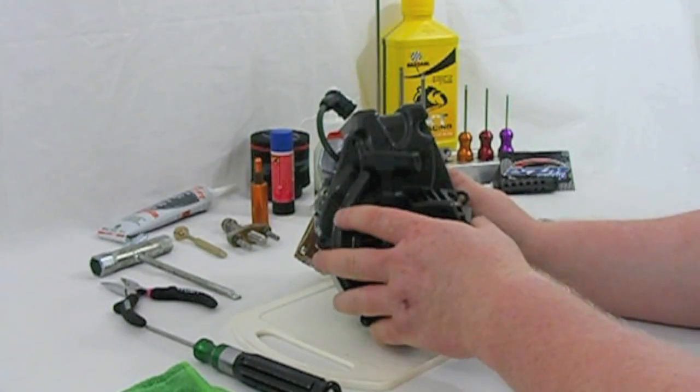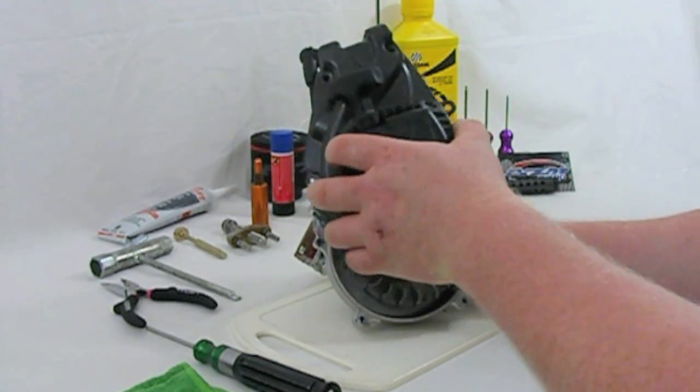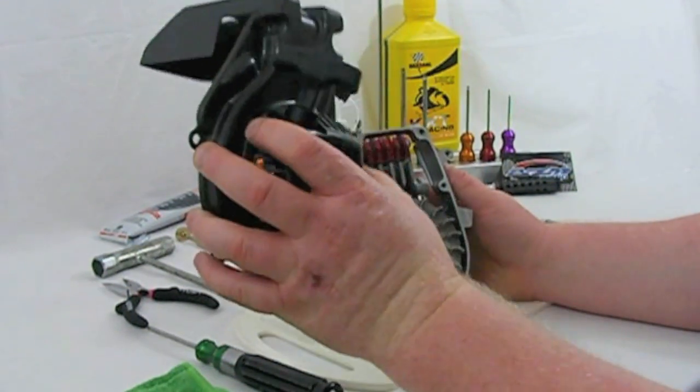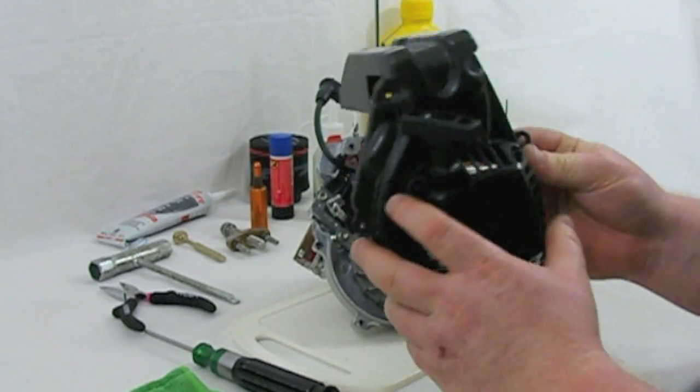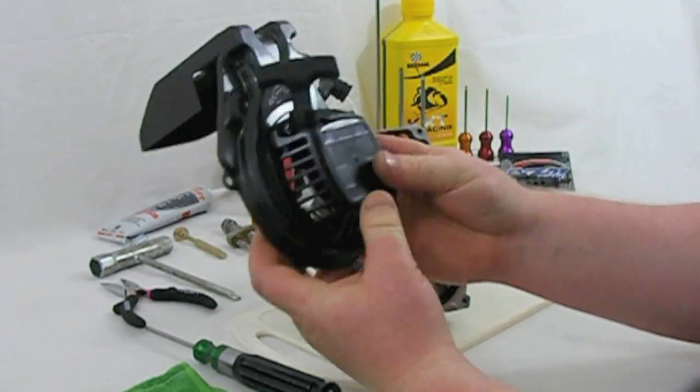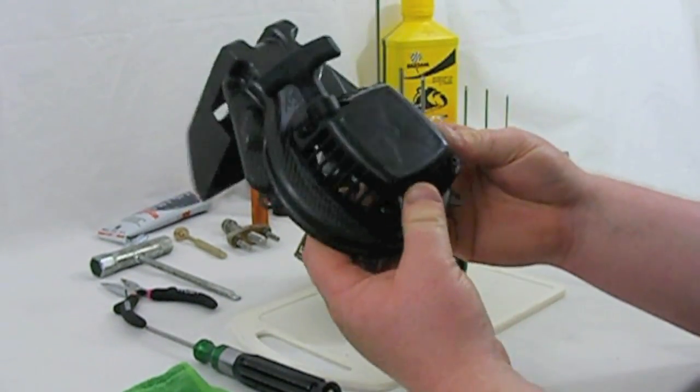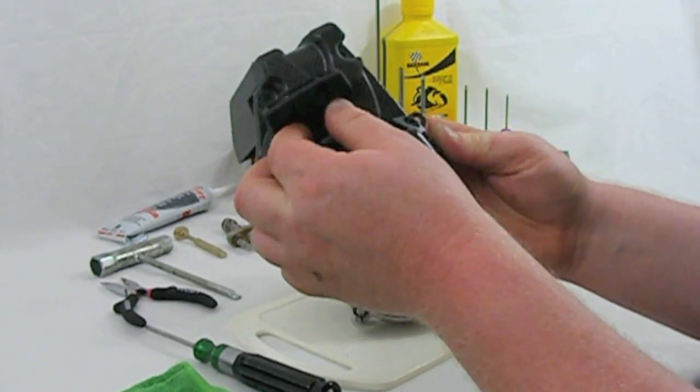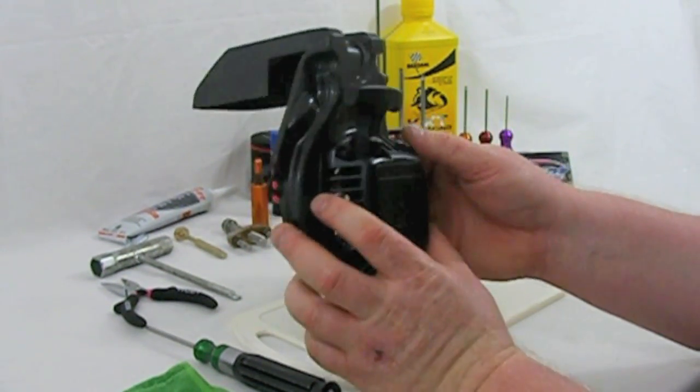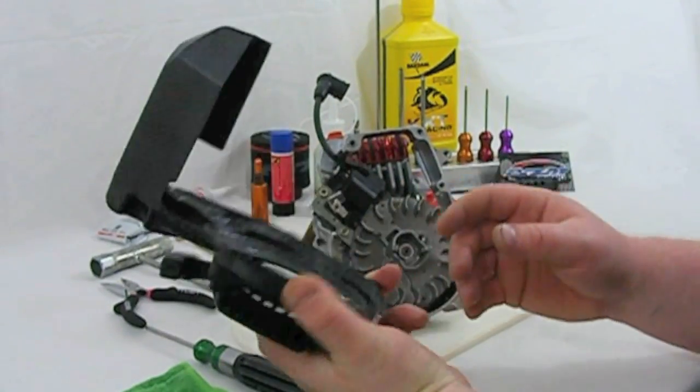Once you've got the five screws removed, the flywheel cover fan cover simply pops off. Notice that the pull starter is still attached. There are pen nuts in the carbon fan cover if you need to take it off you can do, but just for quick disassembly you don't need to. You can just remove it as one whole unit.